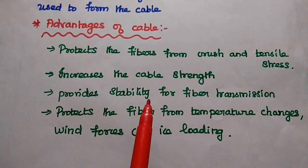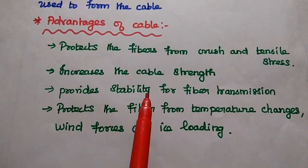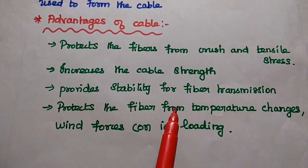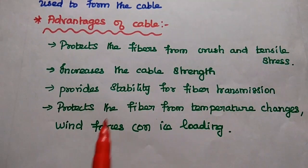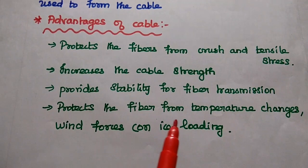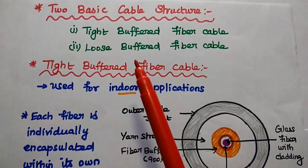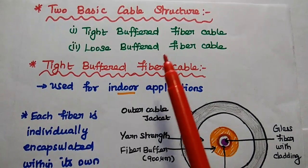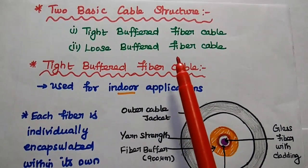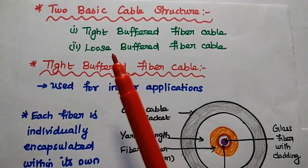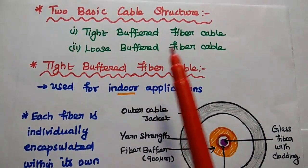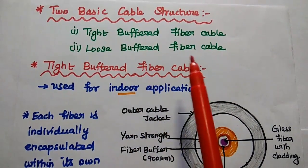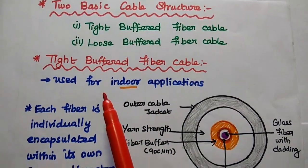It provides stability for fiber transmission. It protects the fiber from temperature changes, wind forces, or ice loading. There are two basic cable structures used in optical communication: one is tight buffered fiber cable, and the other is loose buffered fiber cable.